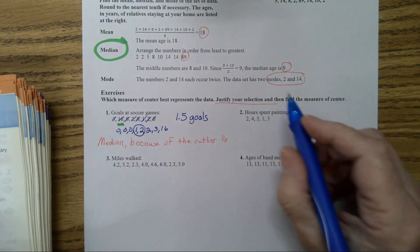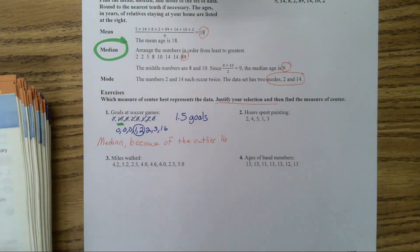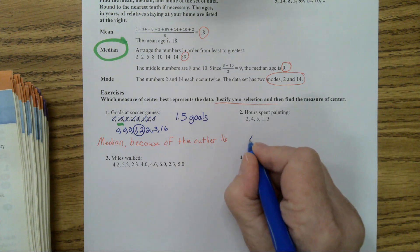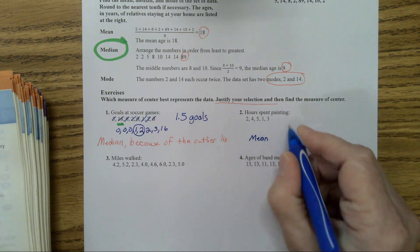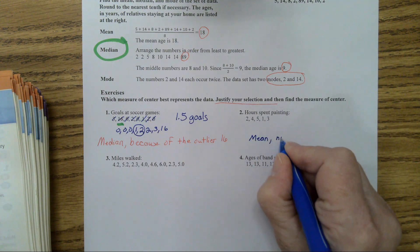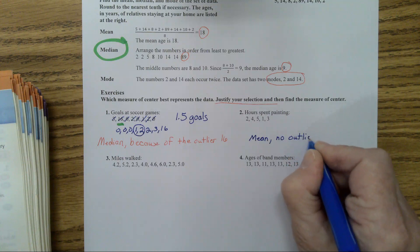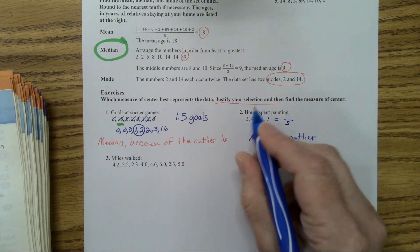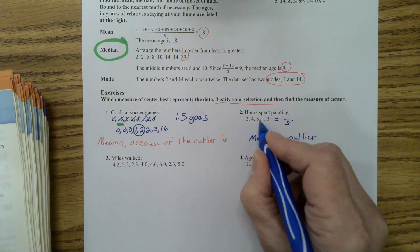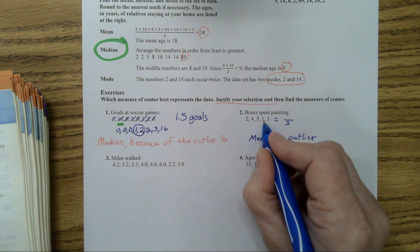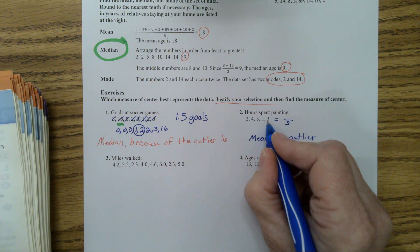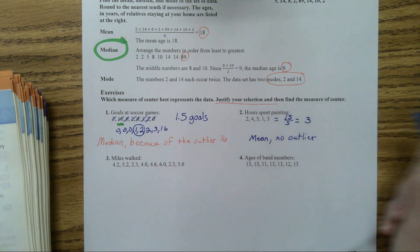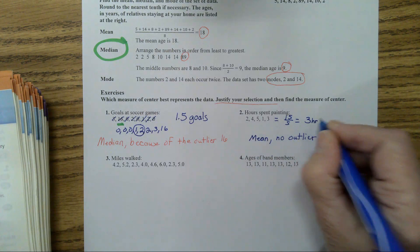For number two, what do you suggest? The mean — there is no outlier, so we're going to do the mean. Why? No outlier. Let's add those all together and divide by five: 2 plus 4 is 6, plus 5 is 11, plus 1 is 12, plus 3 is 15. Fifteen divided by five is 3. Three hours is the average spent painting.